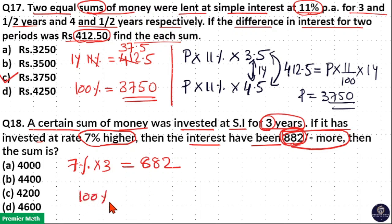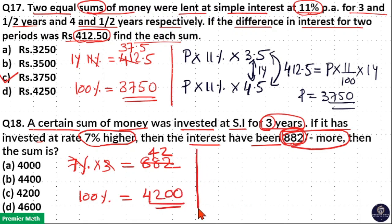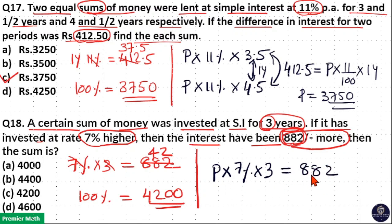Then 100% is the sum. 7 × 3 = 21. 21 goes 4 times in 88, remaining 4. 21 goes 2 times in 42. So 1% = 42, meaning 100% (the sum) = 42 × 100 = 4200. Using the formula with principal P at 7% per annum for 3 years gives P = 4200. So option C is your answer.